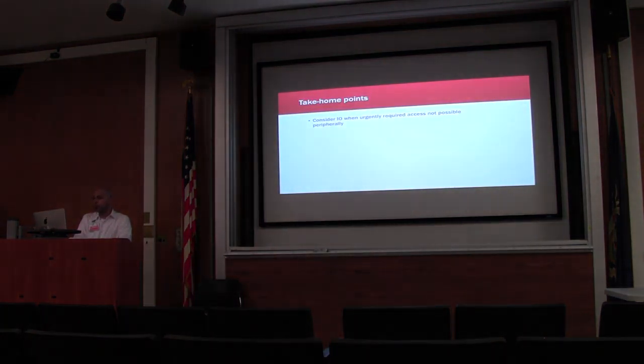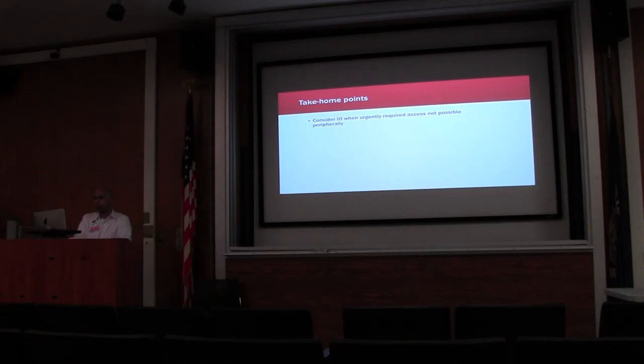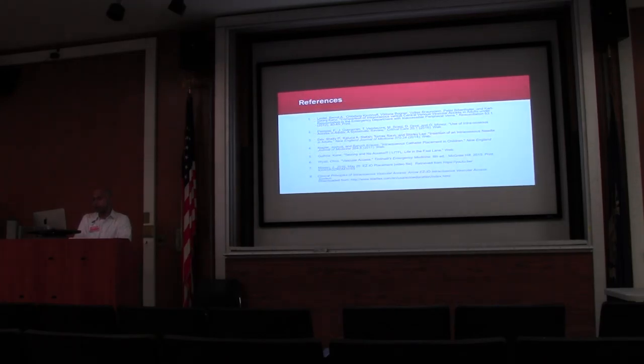So my take-home points for you guys. Whenever there's a patient who's crashing and you can't get that peripheral, strongly consider putting in an IO. Just remember how to insert the IO, including the landmarks for the humerus, the proximal distal tibia, and the distal femur. Technique for doing it. Where do you find the IOs in hospitals? Here are the references. And I want to thank Dr. Scroden, sorry to read for the feedback. Questions?